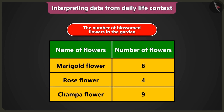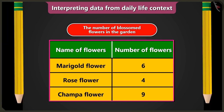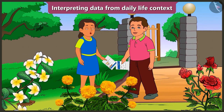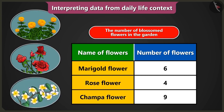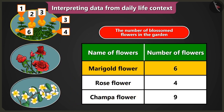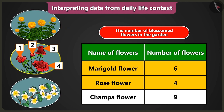The data collected about the number of blossomed flowers in the garden has been shown in this table. This is very interesting. Now I will not have to count the flowers one by one. After understanding the table, I have understood which and how many flowers have blossomed in the garden. I understood that there are three kinds of flowers — marigold, rose and chumpa — that have blossomed, with six marigold, four rose, and nine chumpa flowers.